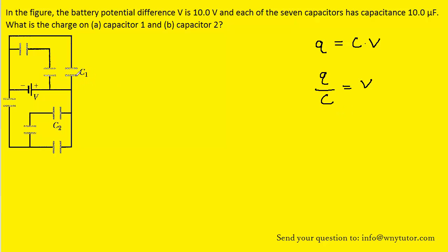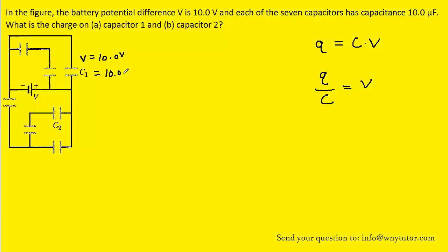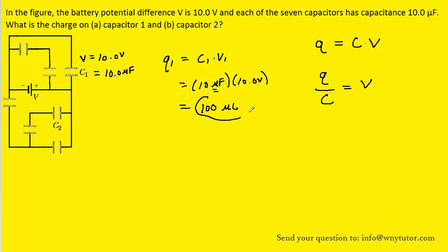For part A, to calculate the charge on C1, all we have to do is recognize that this capacitor is in parallel with the battery marked V. Because the capacitor is in parallel, the potential difference across its plates will be the same as the potential difference supplied by the battery, which is stated to be 10 volts. We know the capacitance is 10 microfarads, so we use the first equation: 10 microfarads multiplied by 10 volts gives us 100 microcoulombs. This is the correct answer to part A.